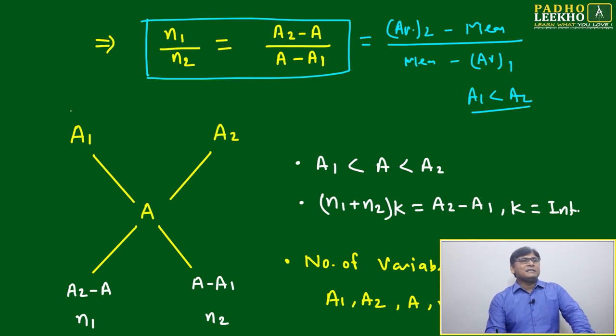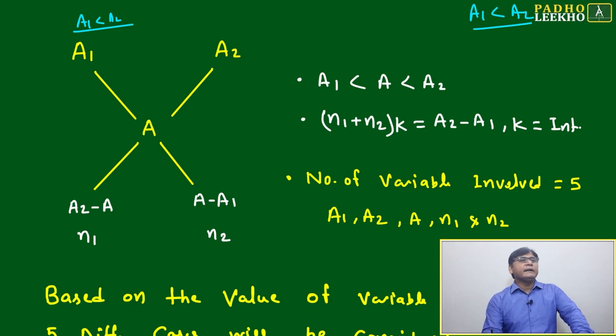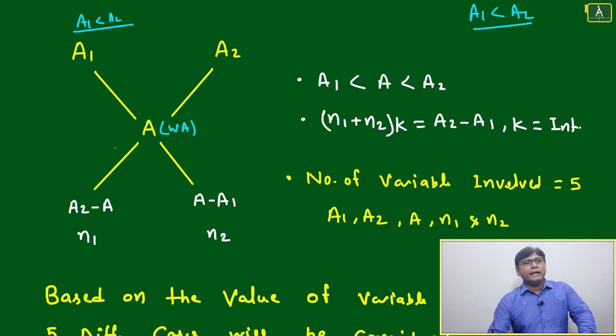Now we can represent it this way. This is your A1 where A1 is less than A2, and this is your A2. This side is your weighted average, represented by A. This is your n1, this is your n2.